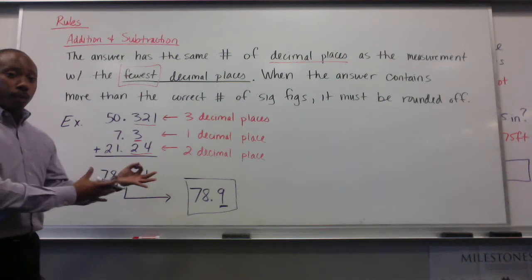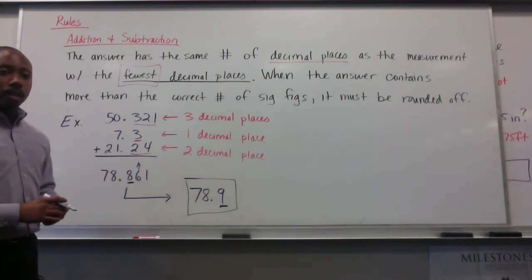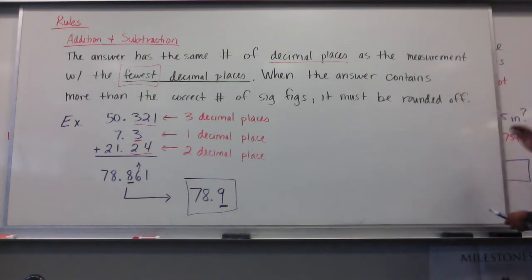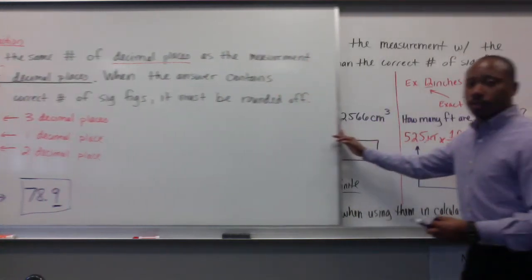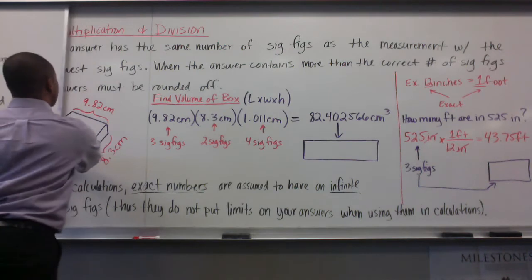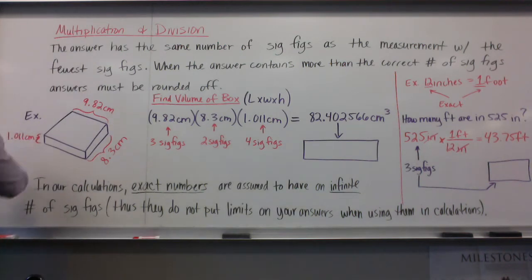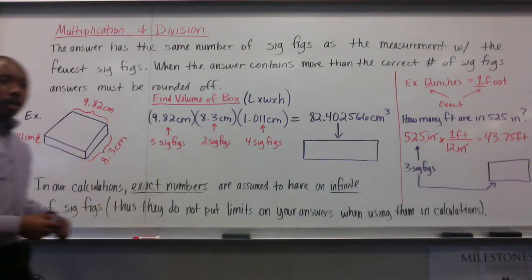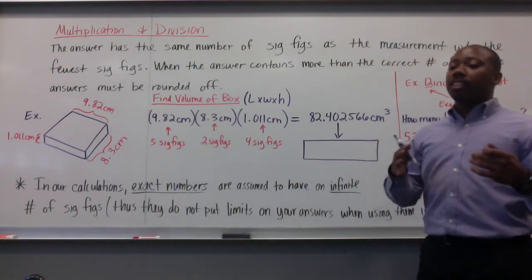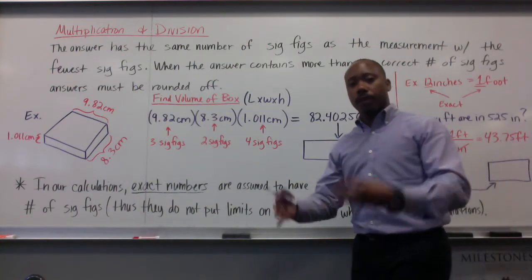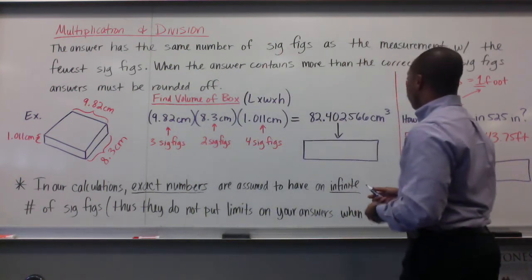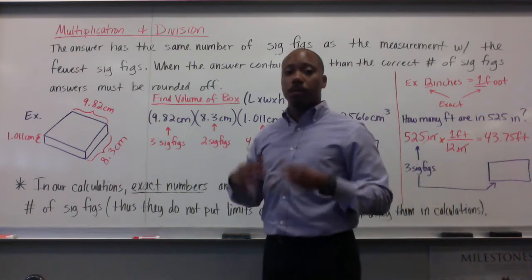Of course, we have some units associated with this because we are talking about measurements. That was addition and subtraction. Multiplication and division will have different rules. The answer has the same number of significant figures as the measurement with the fewest significant figures. When the answer contains more than the correct number of significant figures, again, the answer must be rounded.